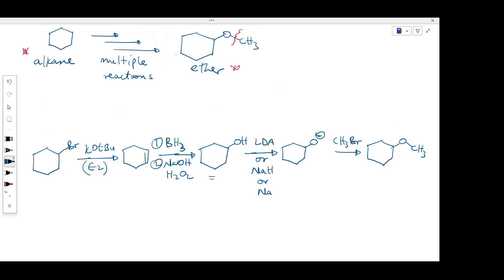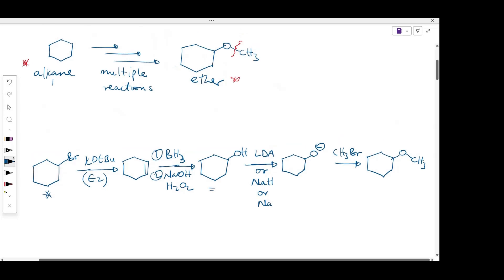The next question then becomes, how can I make my alkyl halide? And remember that our starting material is an alkane. In other words, what reaction can I leverage to convert the alkane to the alkyl halide? So the reaction that can make this happen is radical bromination of alkane. So react that alkane with bromine under light condition.